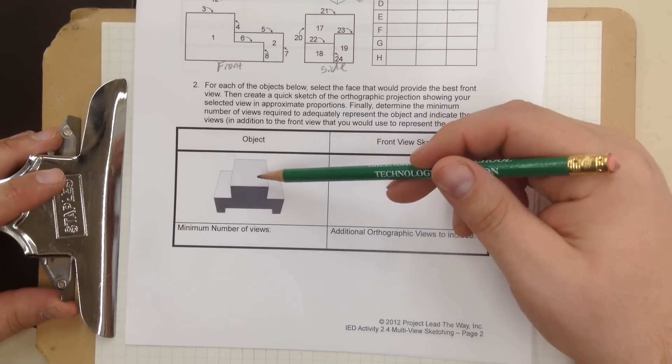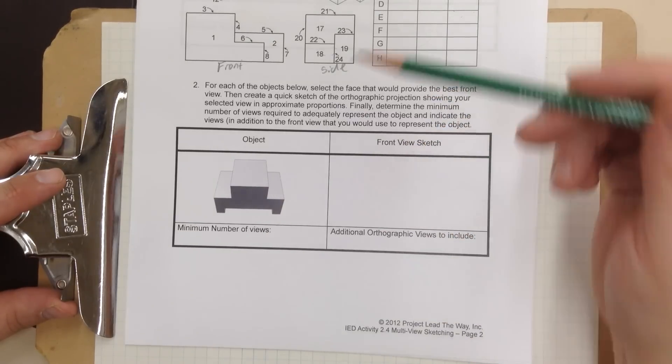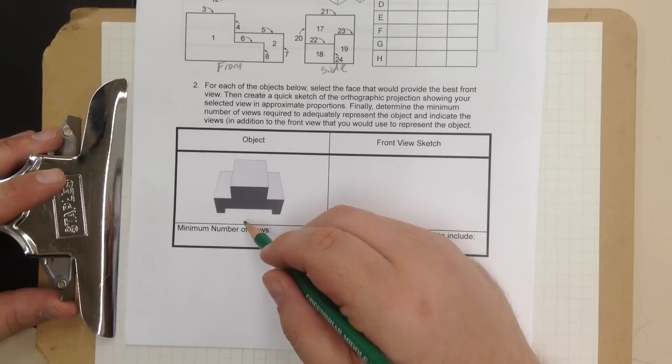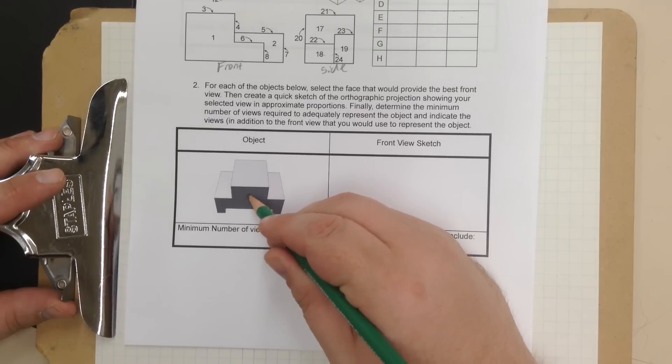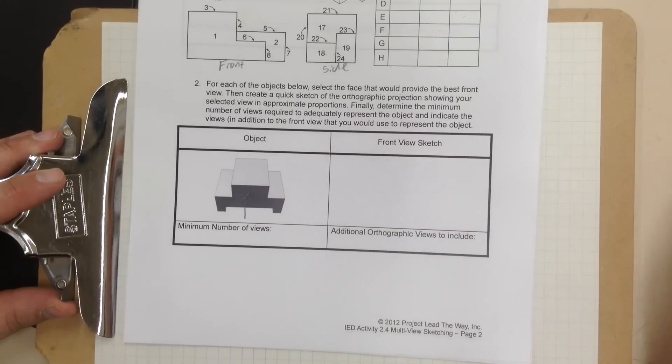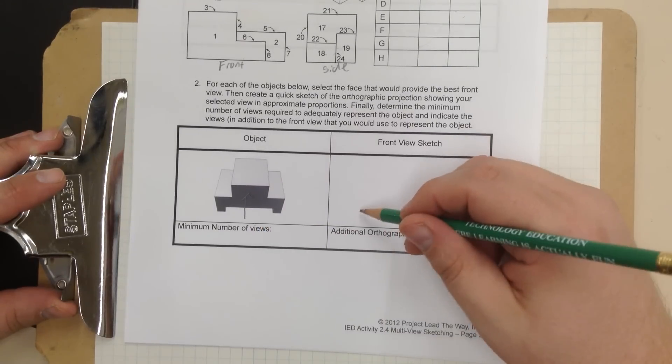This is 3D isometric. We need to do a 2D version. And for me, this face right here is going to make the most sense for the front view sketch. So in order to do that,